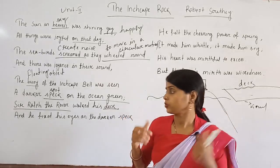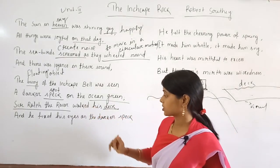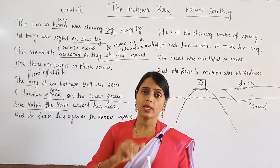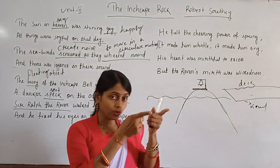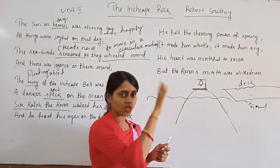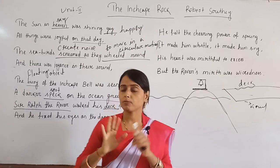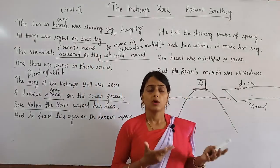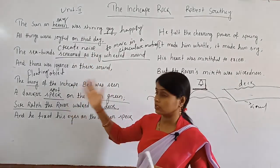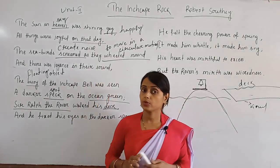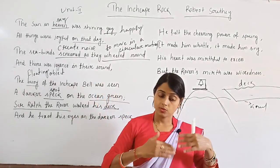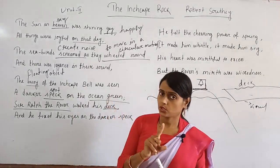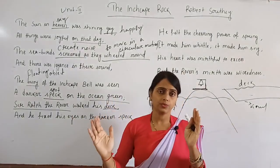He fixed his eyes on the darker speck. When he was moving on his deck, he suddenly noticed a darker speck — the Inchcape rock and the bell tied to it. You might wonder where this character came from: in Unit 1, a ship was mentioned moving silently without any commotion. That ship belongs to Sir Ralph. So there is a link between Unit 1 and Unit 2.